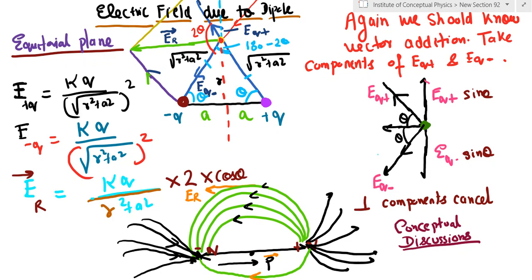Now this is again not a derivation. This is a straightforward case of vector algebra. There is no derivation in this, right? So don't use heavy words like derivation if you know the electric field due to a charge at some distance and you can easily do that.